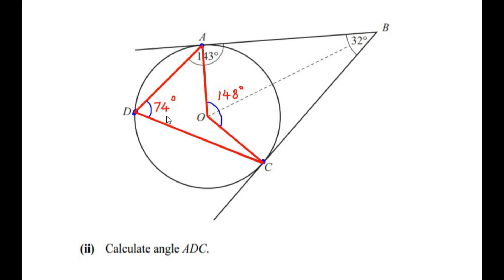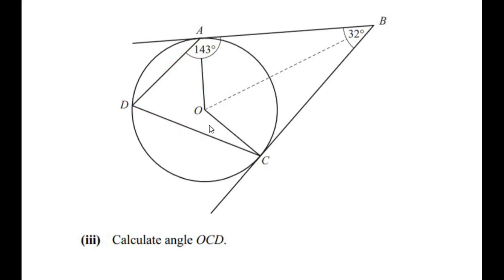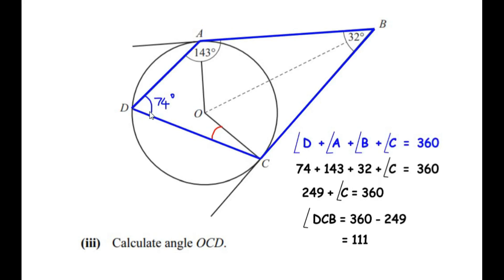Now let us move on to the third sub-question: calculate angle OCD. For that, let us consider the quadrilateral DABC. In part 2 we found angle D as 74 degrees. Since DABC is a quadrilateral, all angles add up to 360 degrees. So angle D plus angle A plus angle B plus angle C equals 360 degrees. Substituting: 74 plus 143 plus 32 plus angle C equals 360. Adding 74, 143, and 32 gives 249, so angle DCB equals 360 minus 249, which is 111 degrees.